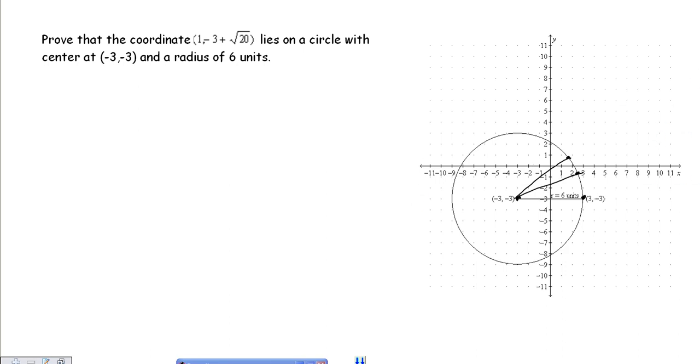So in order to prove that a point is on the circle, we just have to use the distance formula and determine that the distance between the two points is equal to the radius.